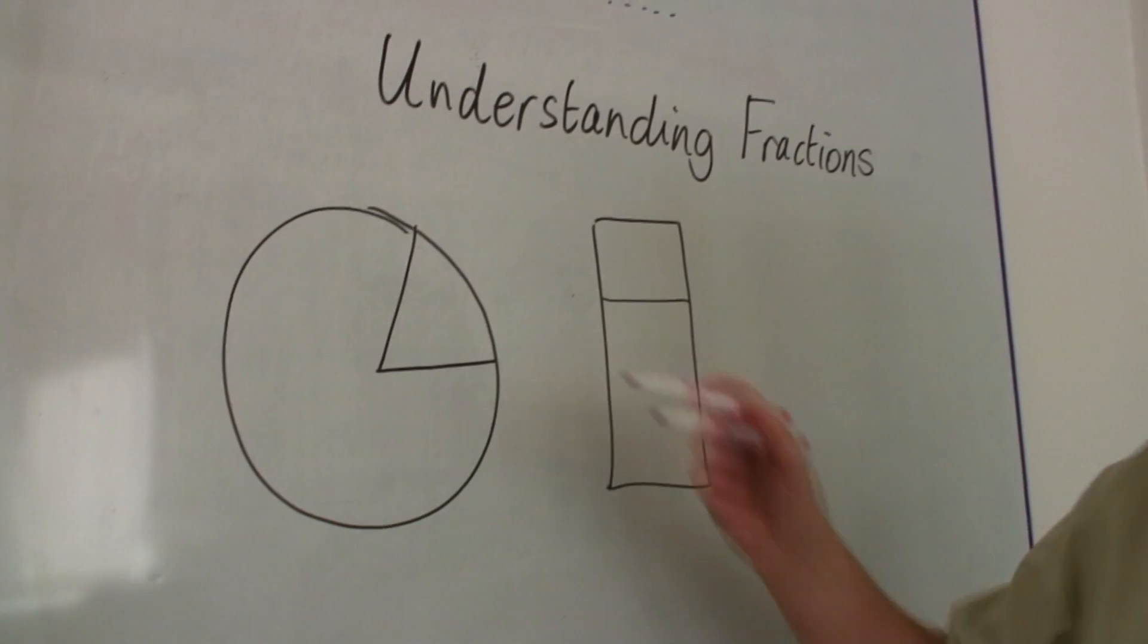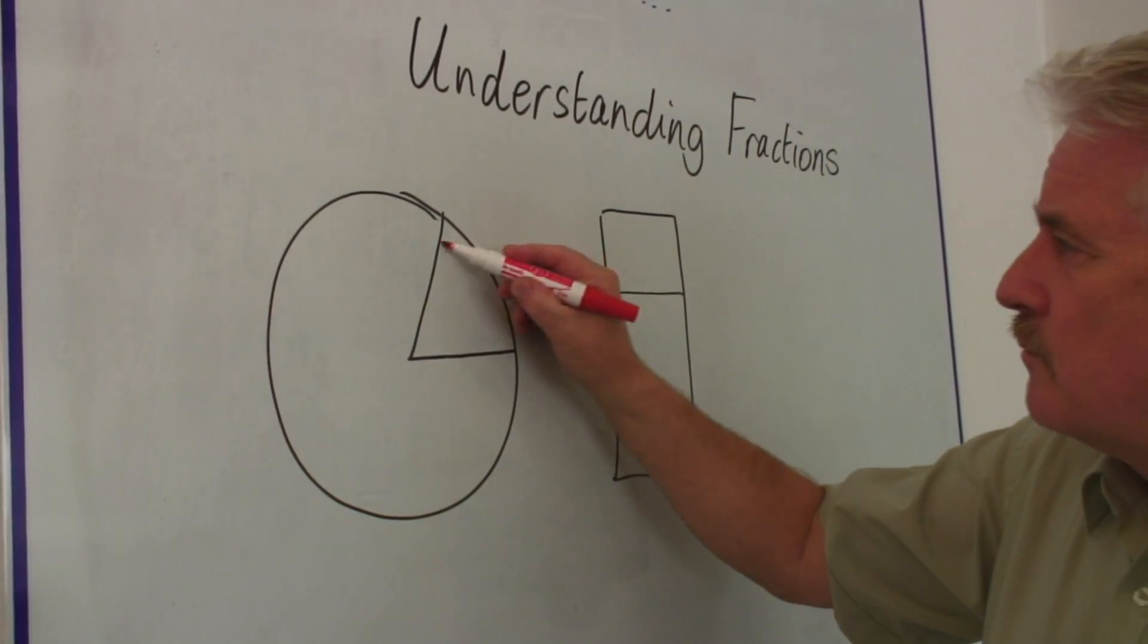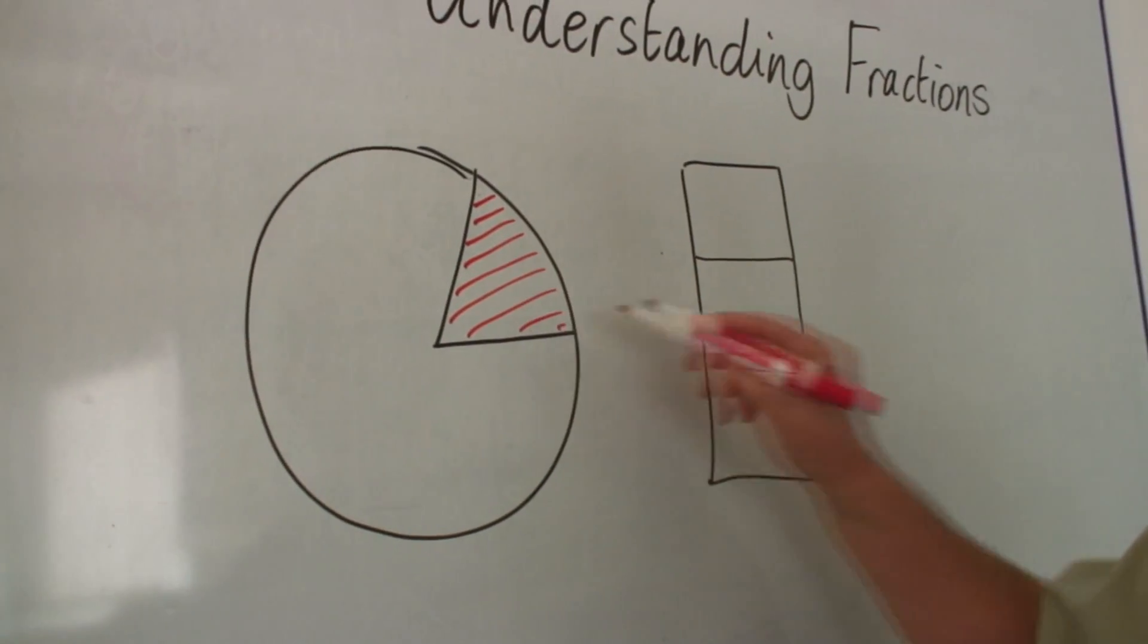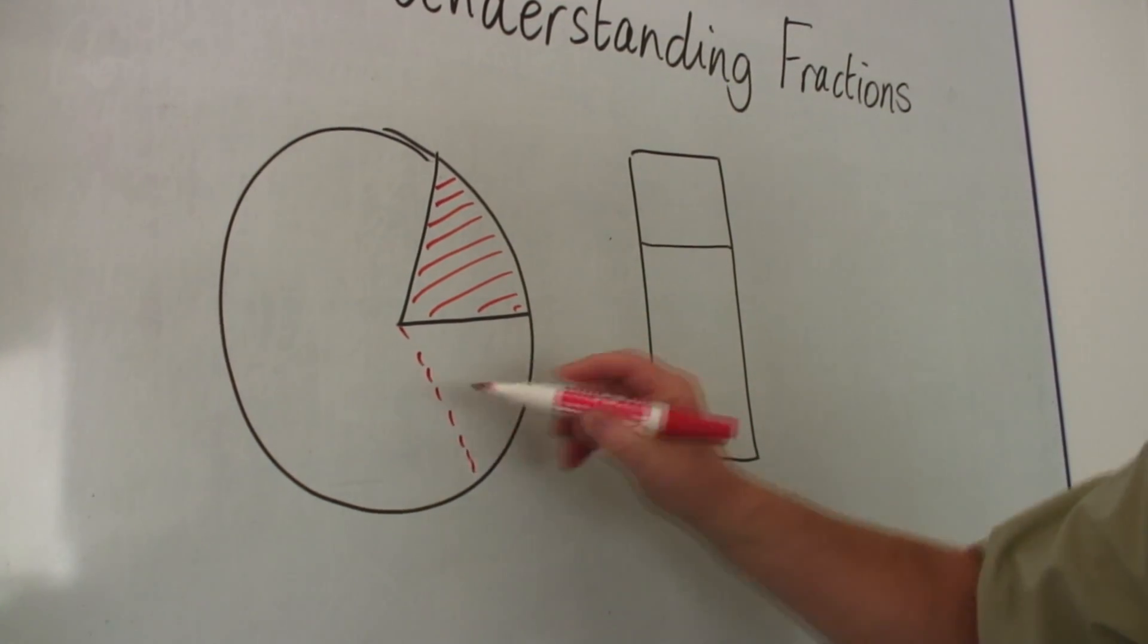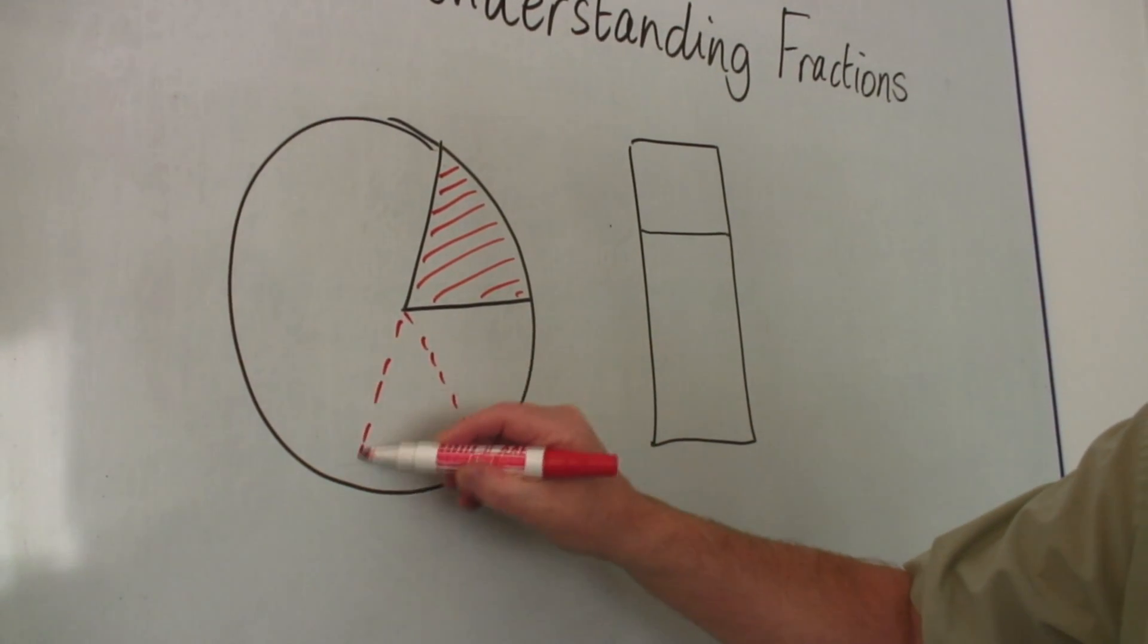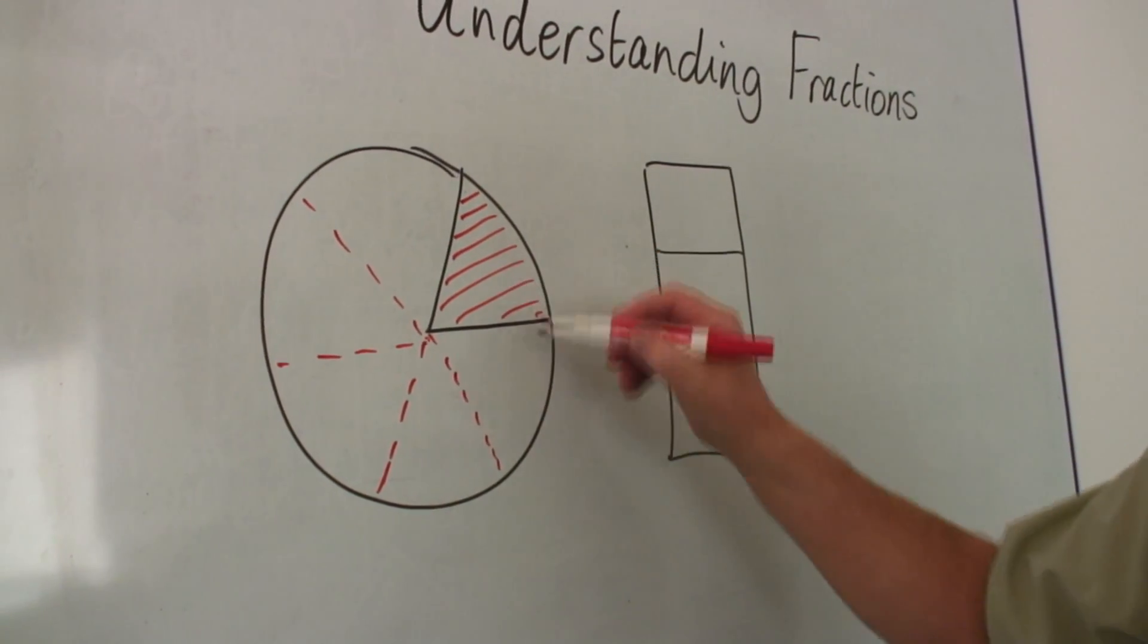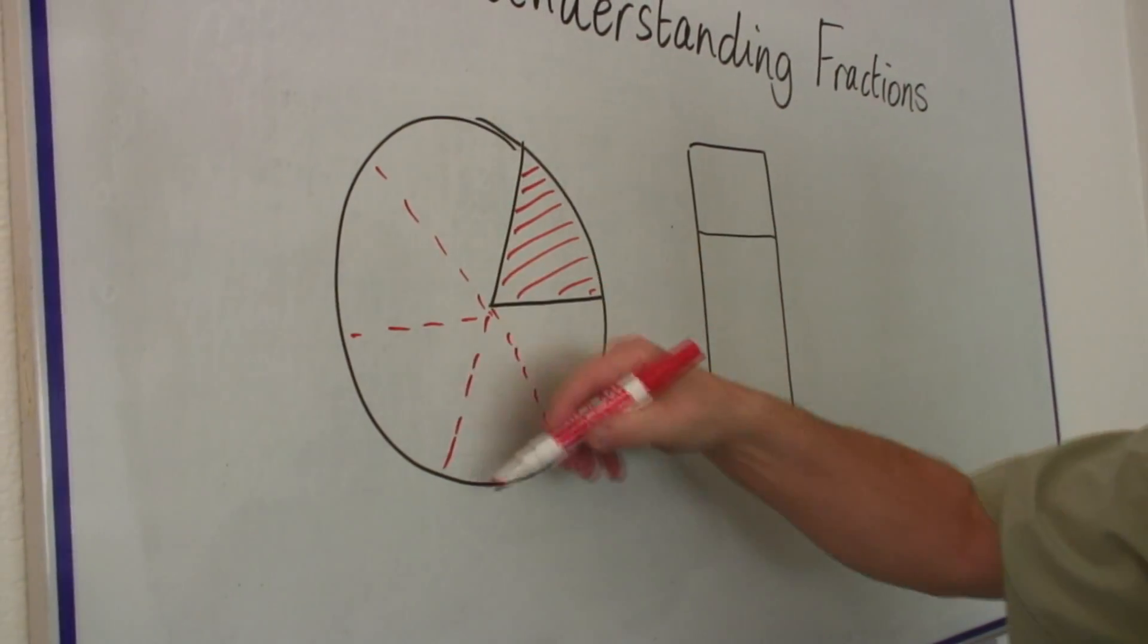So if we look at this in particular, we would say, what fraction is this? Well, let's do some quick drawing of a few dotted lines and we'll see that we can get one, two, three, four, five, six of those fractions in the whole.